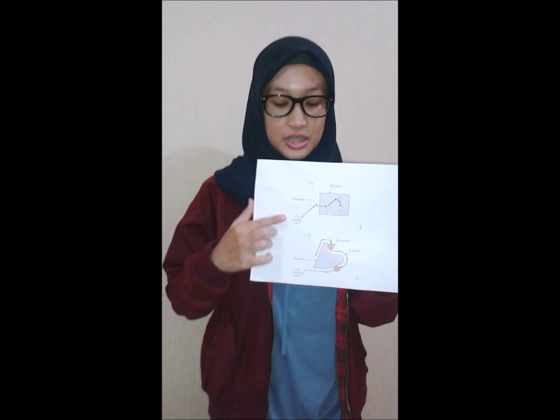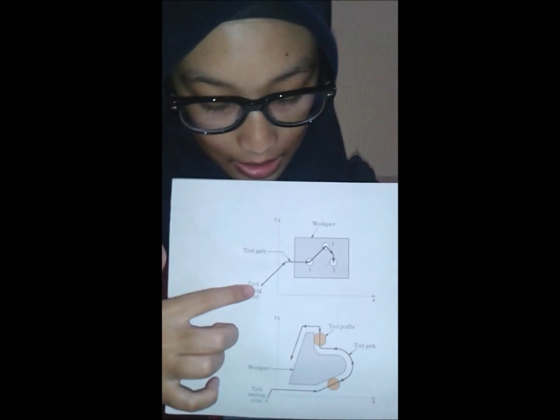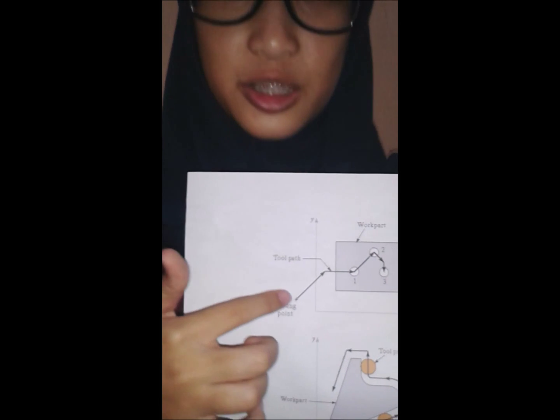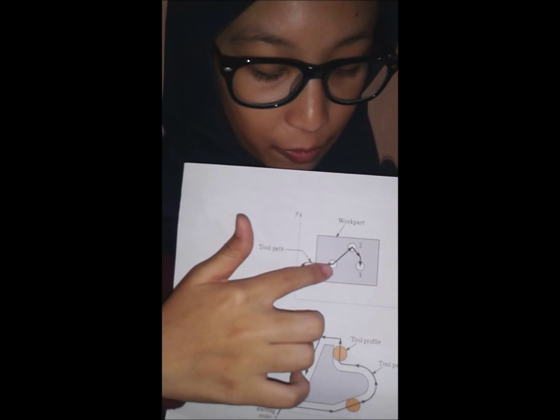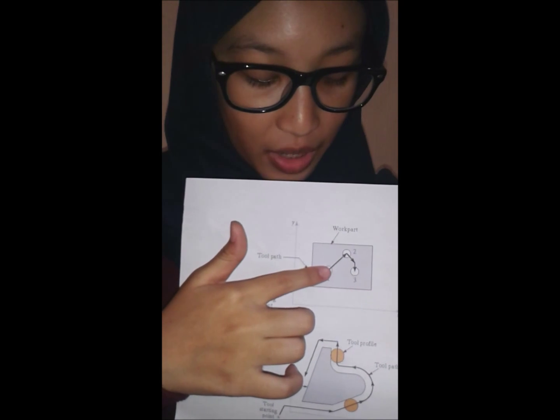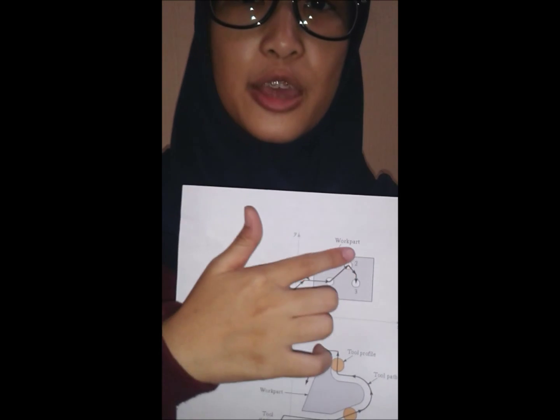Motion control system. There are two types of motion control system. The first is the point-to-point system, also called the positioning system. In this system, the tool is moved to a location and an operation is performed at that location — for example, a drilling operation. As shown in the picture, the line represents the tool path and this is the tool's starting point. From the starting point, the tool moves to the first point and performs an operation, then moves to the second point and performs an operation, and so on.